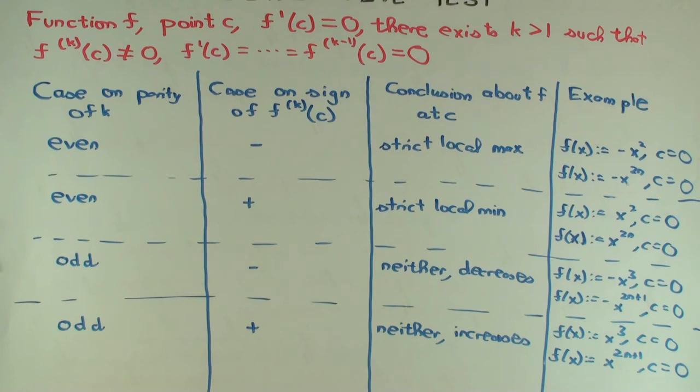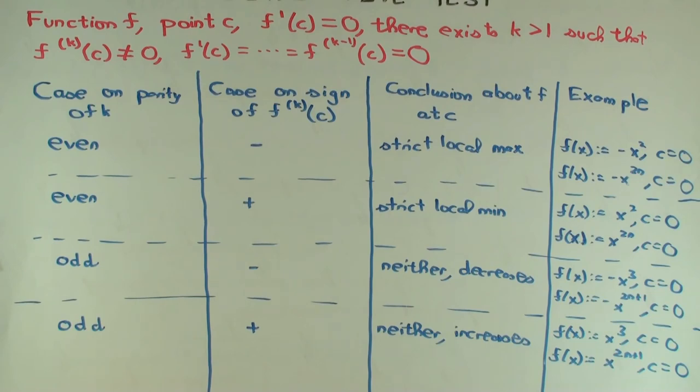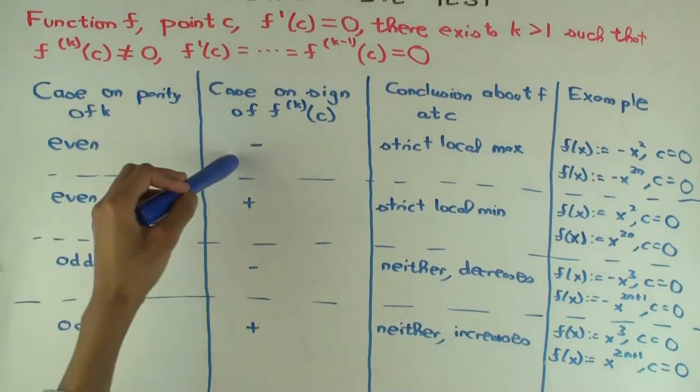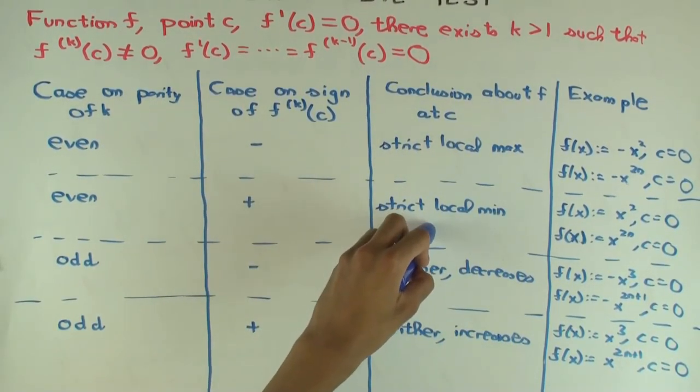Now, I want to go back to the point I said about this being a generalization of the second derivative test. So can you just explain how the second derivative test is a special case of this? Well, if it is your second derivative, you differentiate even number of times. So if the second derivative is non-zero, then you get in the even case. And then if it's negative, you get strict local max, if positive, you get strict local min. That's the usual second derivative test.